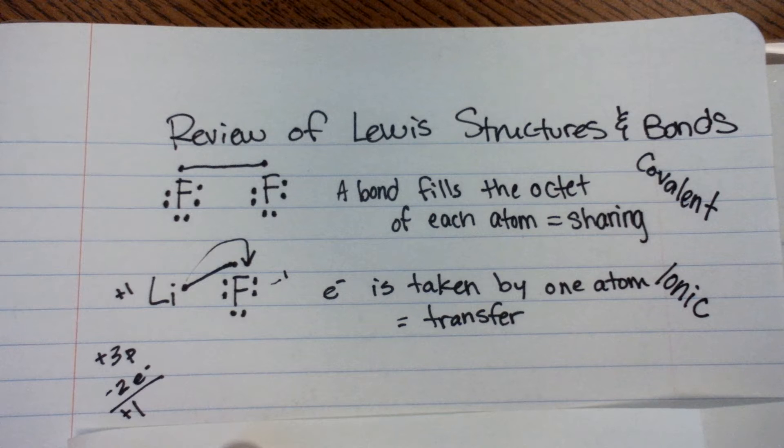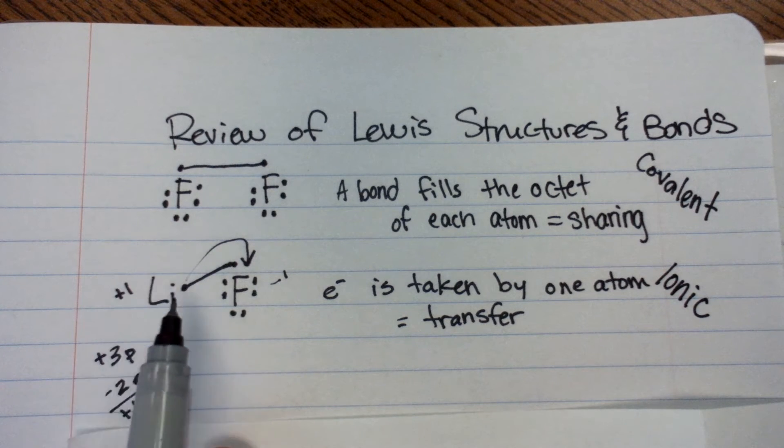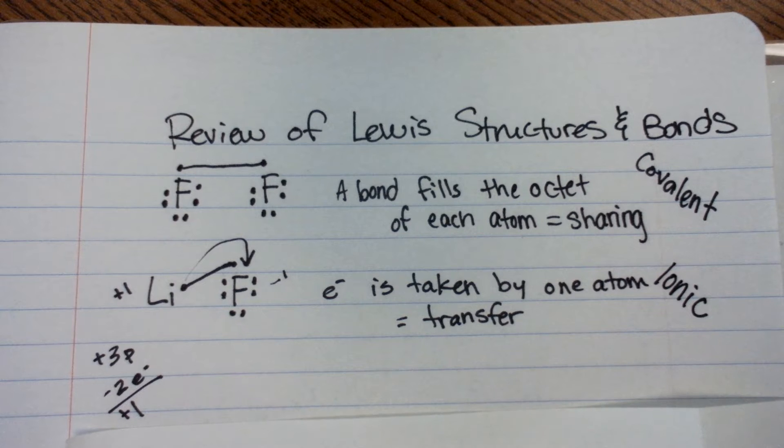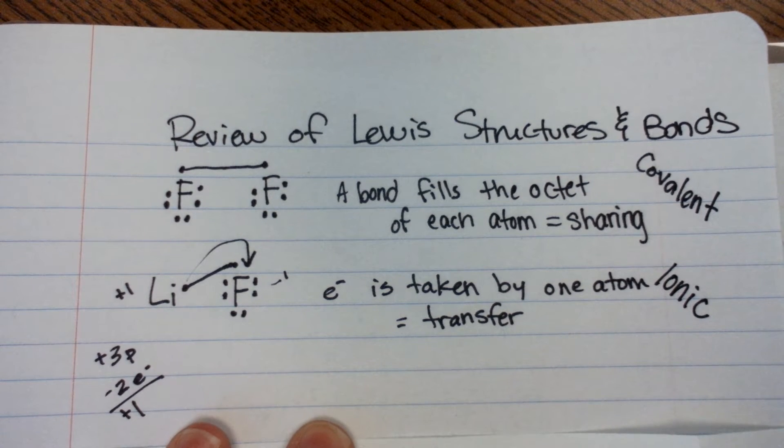So, the bottom line is still the same. We still want to fill the outer shell of each electron. It's just that, in lithium's case, having this extra electron flying around it doesn't fill the shell. So it gives up that electron. Give me a thumbs up if that makes sense.